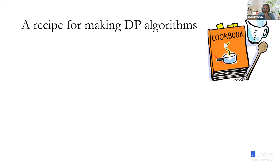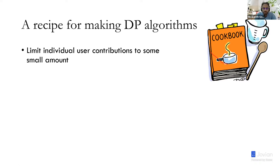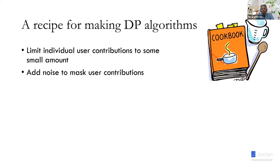Here is a recipe for how to make a differentially private algorithm — a cookbook for DP algorithms. It's actually pretty simple. First, you limit individual user contributions to some small amount — nobody should influence your algorithm too much. Then the key part is to add noise to mask individual user contributions. Without adding noise, you can never make anything differentially private. The algorithm must be randomized and introduce some stochasticity to mask individual user contributions. Those are the two main steps: limit user contributions, then add noise.